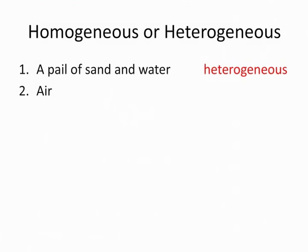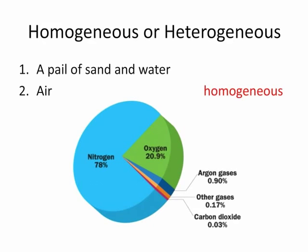Homogeneous or heterogeneous? Air. Air is a mixture of mostly nitrogen, around 78%, and oxygen, about 21%, along with other gases like carbon dioxide and argon. Molecules like nitrogen and oxygen, and atoms like argon, cannot be seen even with most microscopes. The particles spread out evenly so that every breath taken has the same amount of oxygen and nitrogen. Air would be a homogeneous mixture — it could also be called a solution.